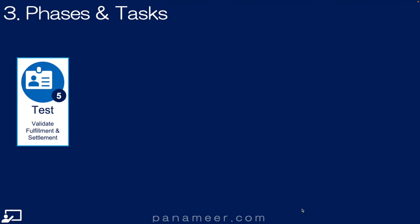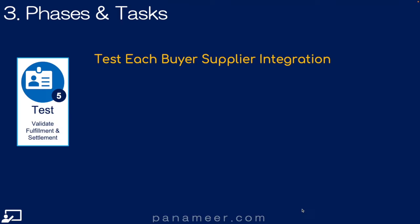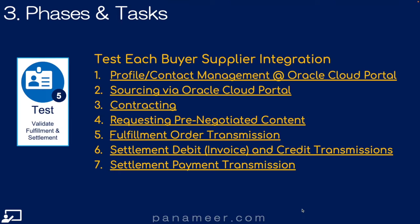Step 5: The Test step. The goal is to test every buyer-supplier enablement integration. This is the most important step. Here are the major tasks. I can't say this enough: test and force your supplier to test code, not just sending messages back and forth from Postman — or you'll have issues later.